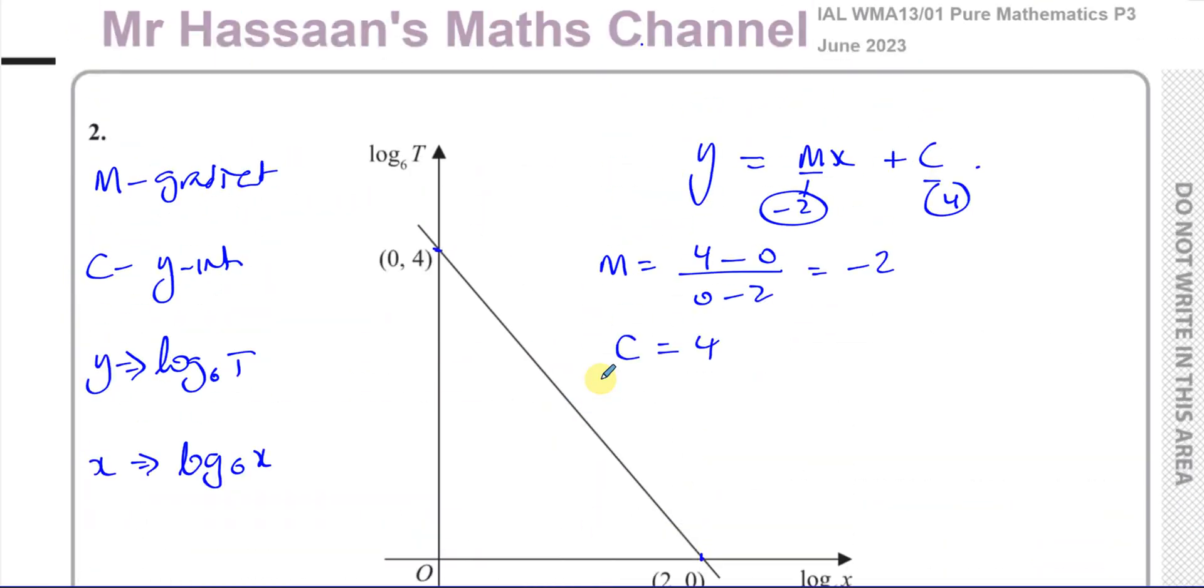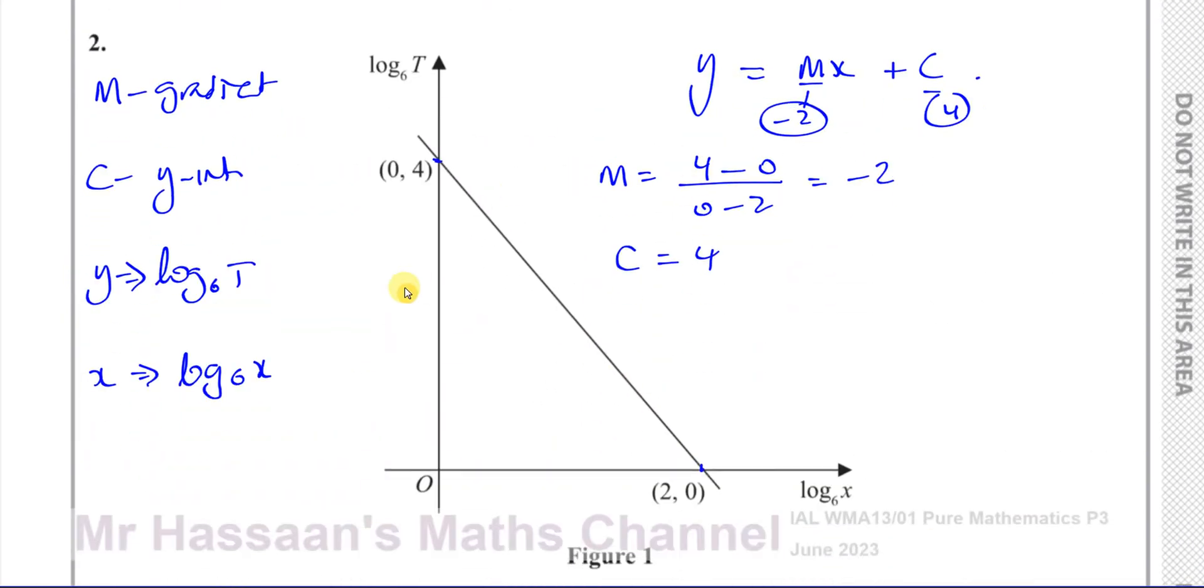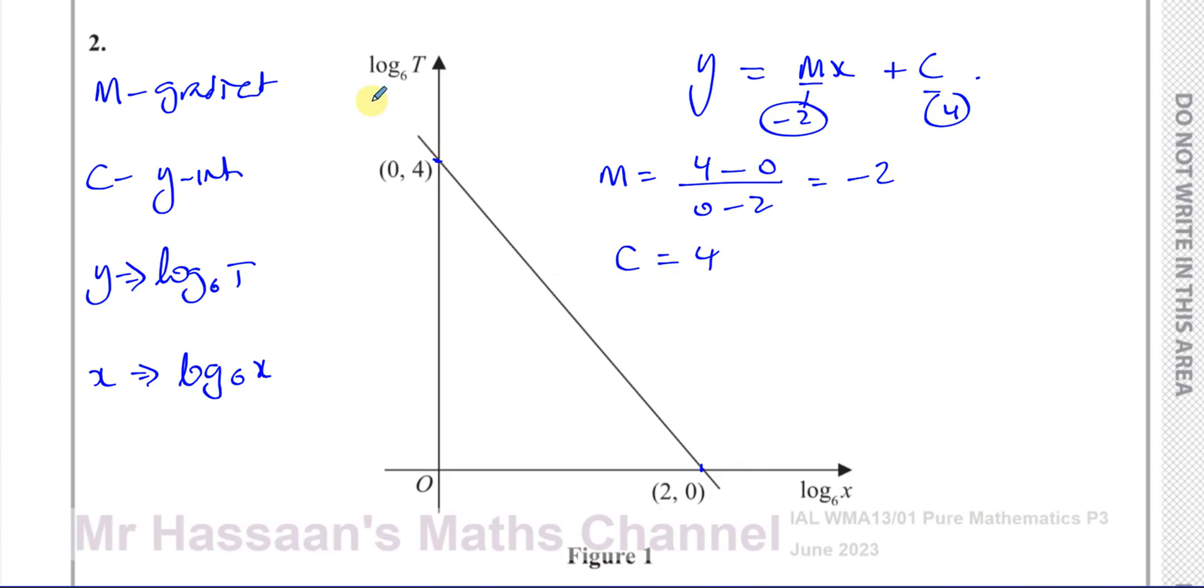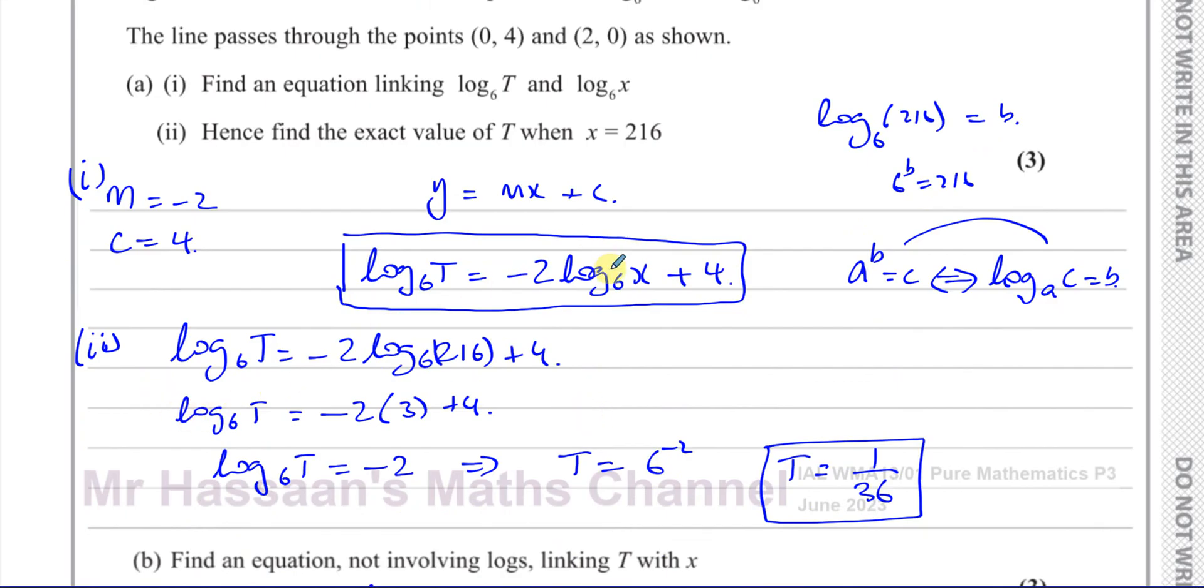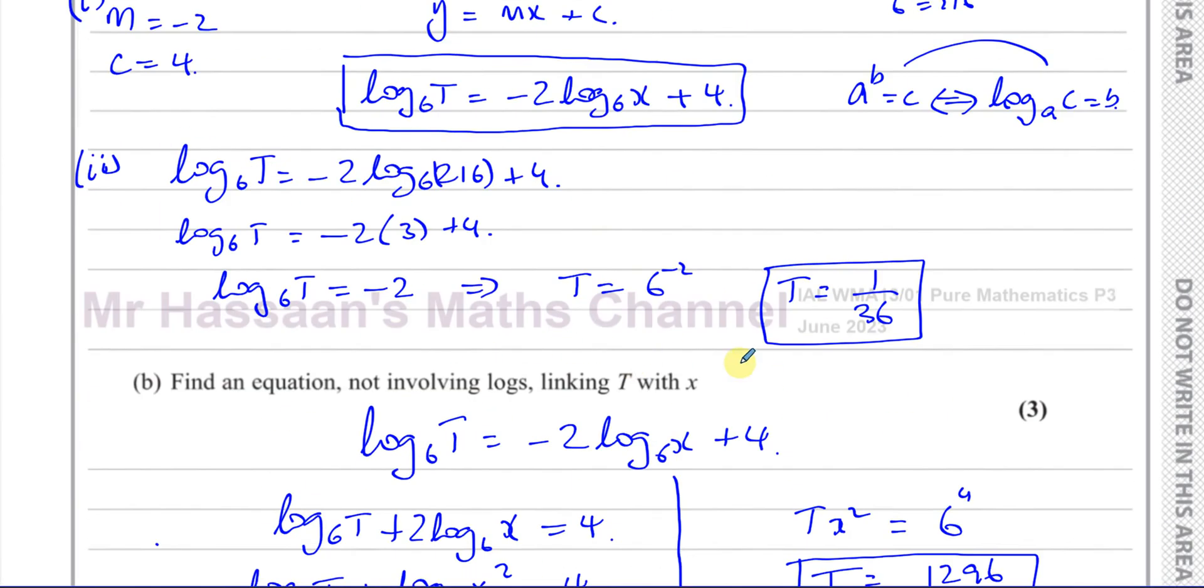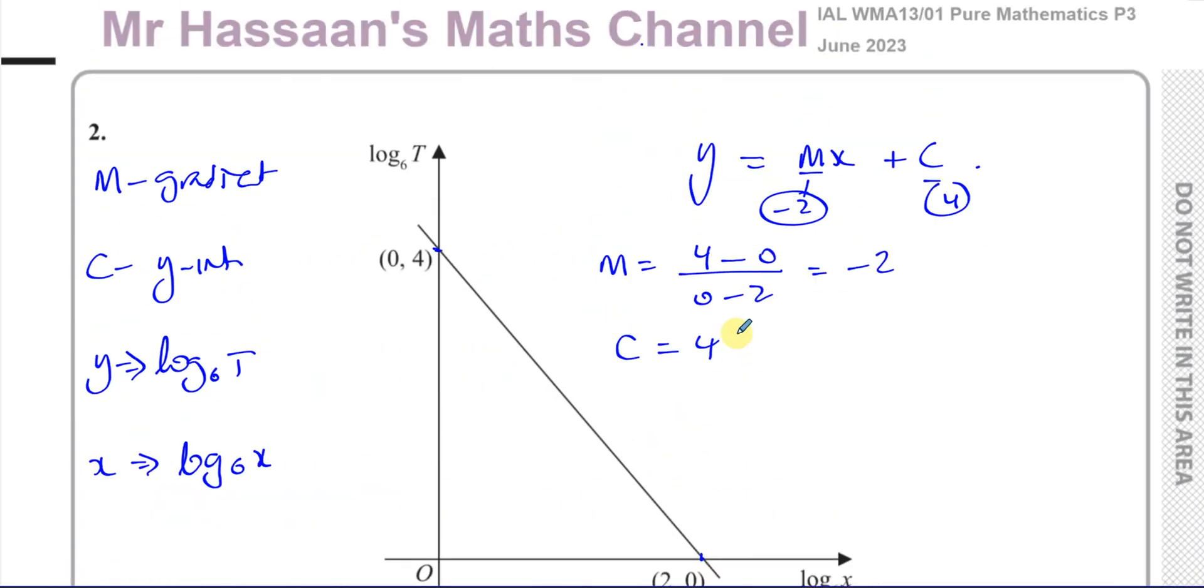So a relatively simple question, just based on your understanding of straight line graphs and how to relate them to these log terms. We made our equation, we substituted X equals 216 in it and found what T is. So you need to know your laws of logarithms to answer this question properly, but it's pretty straightforward, 6 marks. Nothing really too difficult about that question.